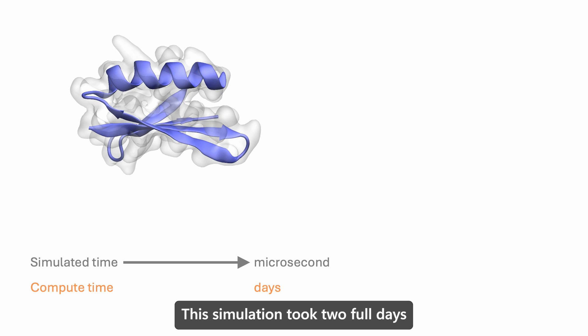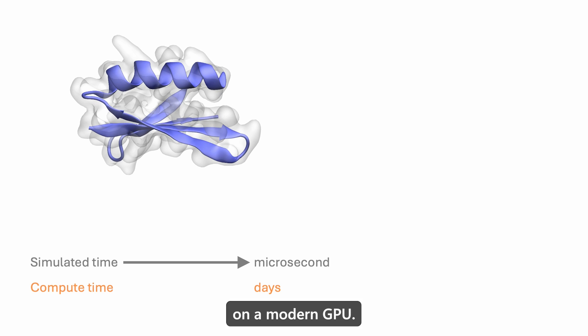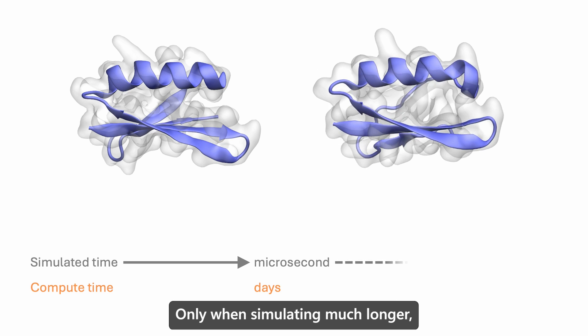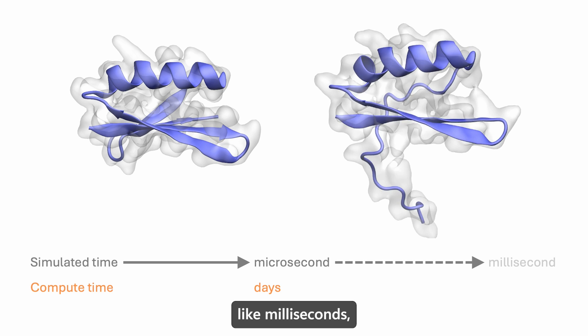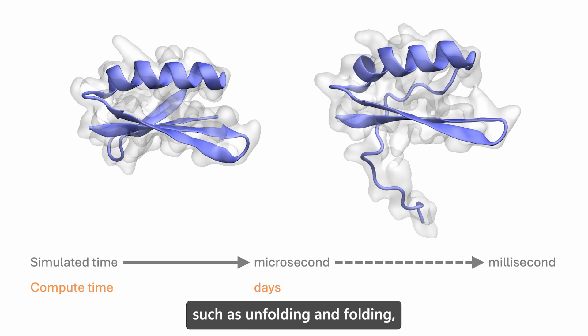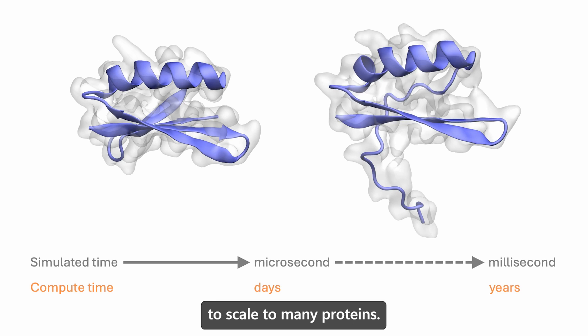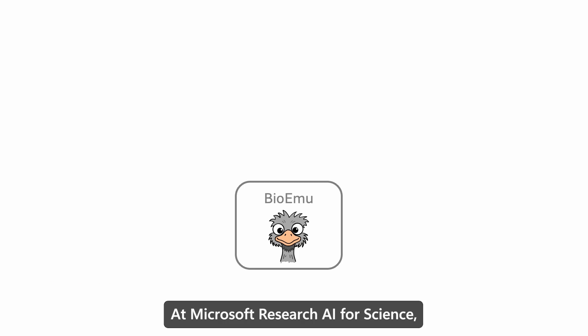That simulation took two full days on a modern GPU and shows very little motion. Only when simulating much longer timescales — like milliseconds — will you see functionally relevant events such as unfolding, folding, binding, and conformational change. But this takes years of compute time, making this approach impractical to scale to many proteins.